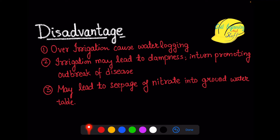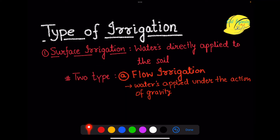These are the disadvantages attached to over-irrigation — if we do not manage the quantity of irrigation properly, these are the consequences that can occur. Now, talking about the types of irrigation, we can broadly categorize them into two categories. The first one is called surface irrigation, where we supply water directly to the soil.